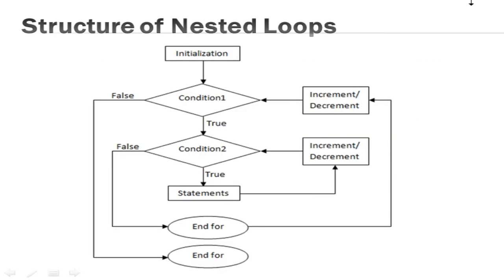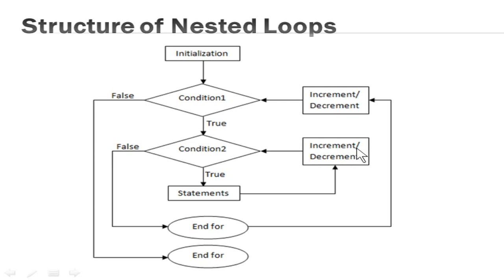Now you can see the structure of a nested loop. First you will have an initialization statement where it initializes the control variable of the outer loop and enters into the condition of the outer loop. If the condition is true, it enters into the inner loop where it will check the condition. If the condition of the inner loop is true, it goes on to execute the body of the inner loop. After executing the body, it goes to the updation statement where it increases or decreases the control variable and goes back to the condition statement of the inner loop. This process continues till the condition of the inner loop becomes false.